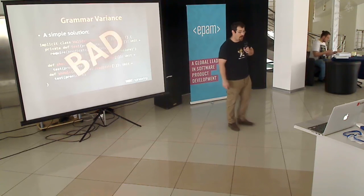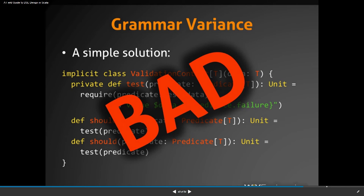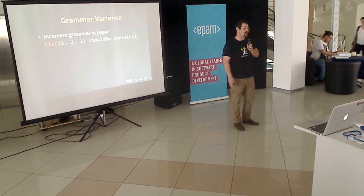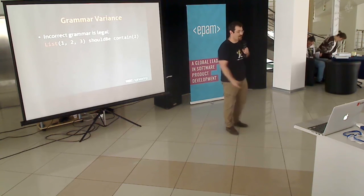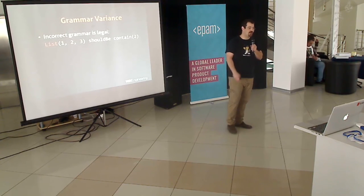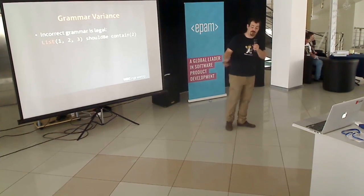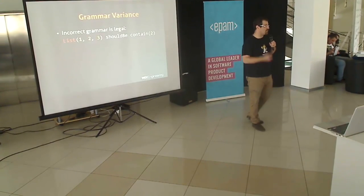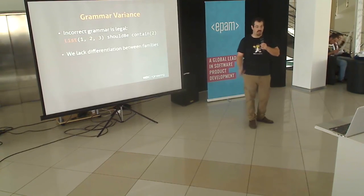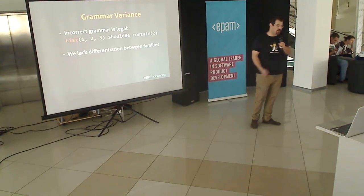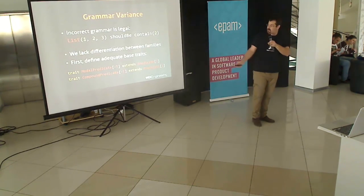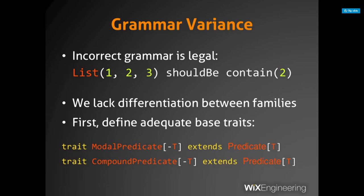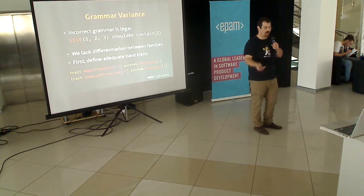But this approach allows you to do things like 'List(1 to 3) should be contain 2,' which is not English. You have a choice: go the lazy route and say if your user wants to write incorrect English, that's fine — or go the careful route and find a way to disallow that type of sentence. One way is to differentiate between these two predicate families. We take our base trait Predicate of T and extend it with ModalPredicate or CompoundPredicate. We're not adding new features, just classifying predicates into two separate families.